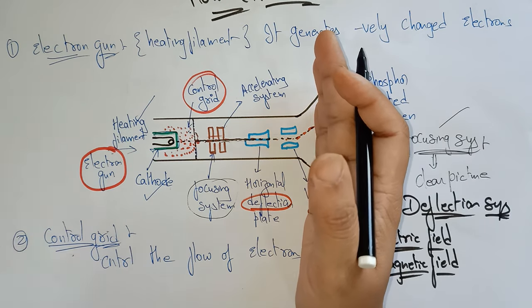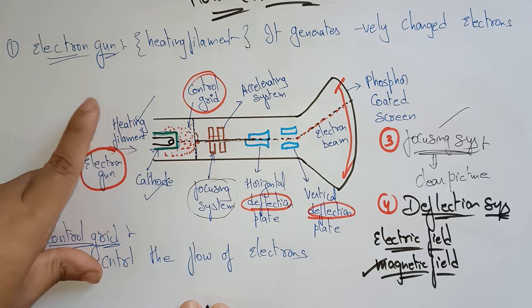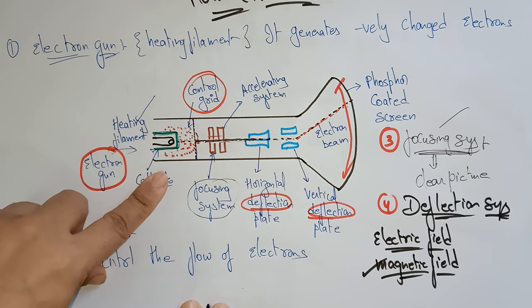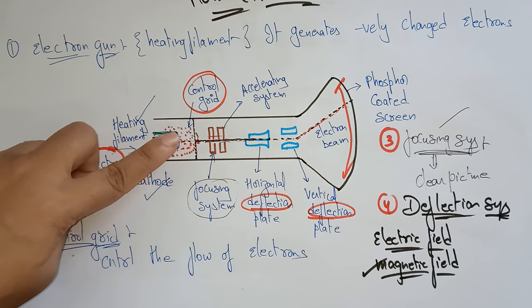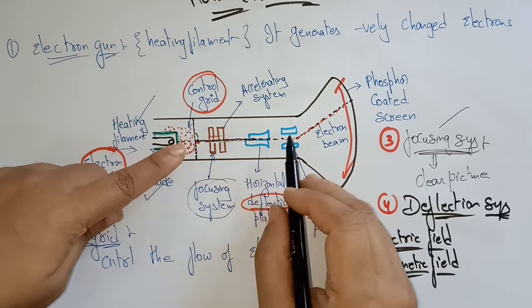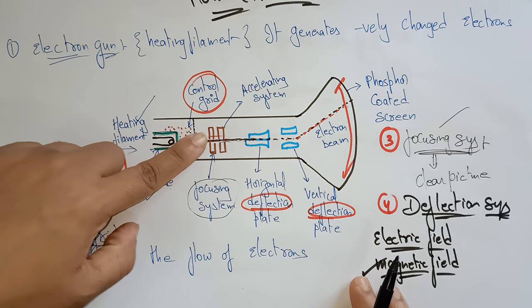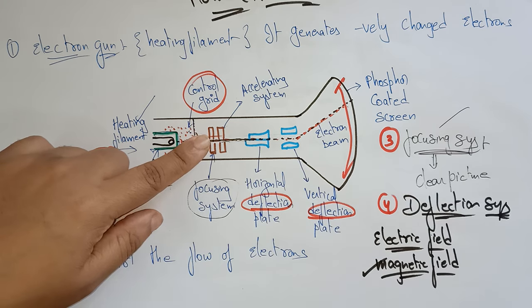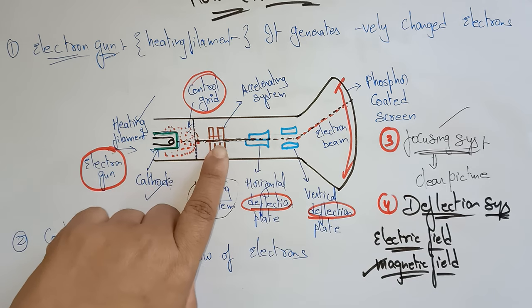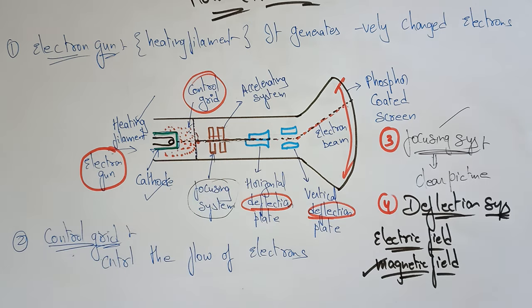To summarize: the electron gun generates electrons using the heating filament and cathode. The control grid controls the flow of electrons so negatively charged electrons do not move freely in the vacuum tube. The focusing system gets a clear picture by focusing the electrons into a narrow beam, and then the deflection plates direct the beam.